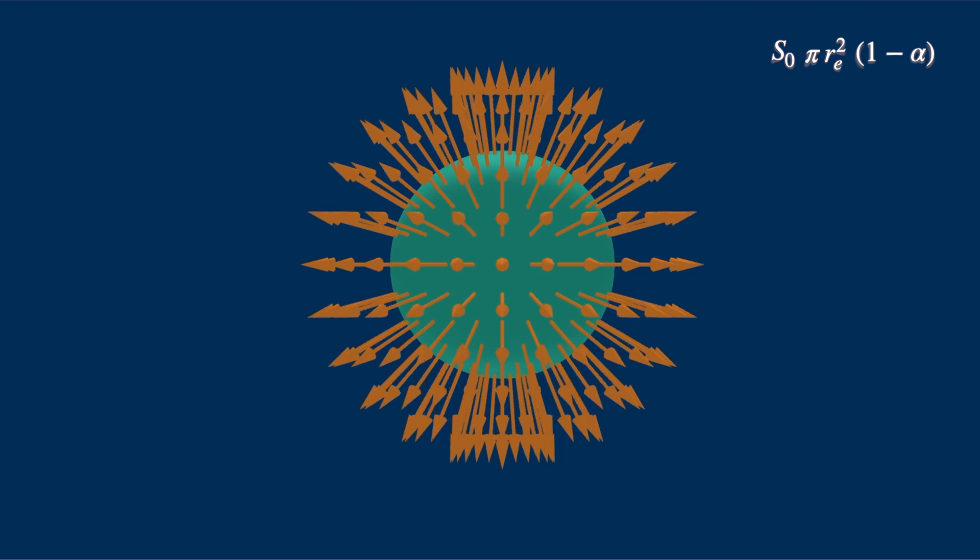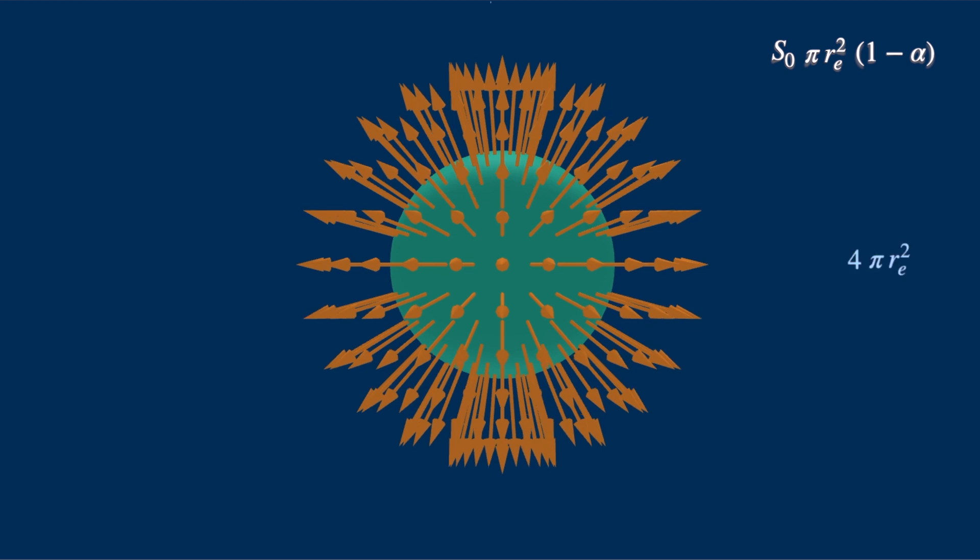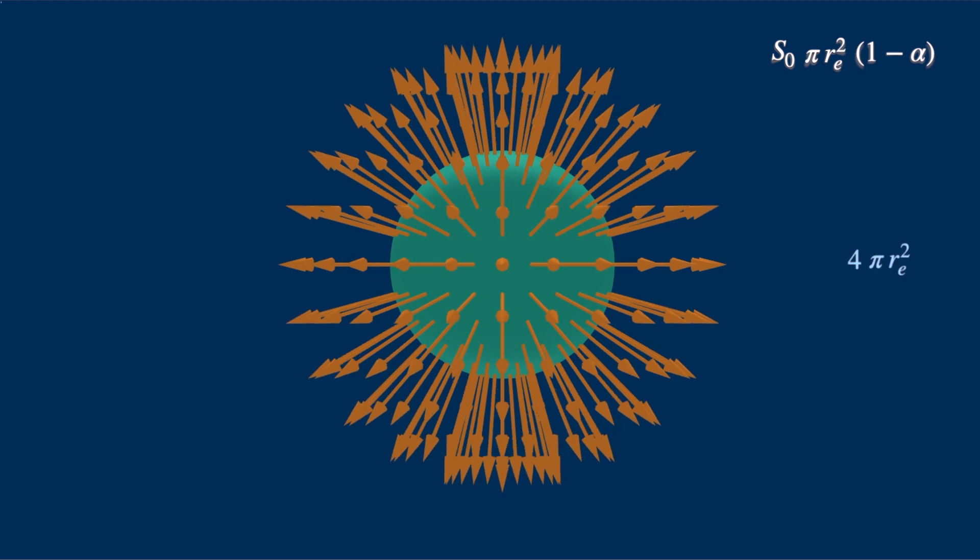Now the Earth will also emit some energy. But it emits energy in all directions. So the area of emission is the whole area of the sphere, which is 4 times the area of the circle.